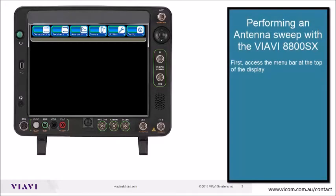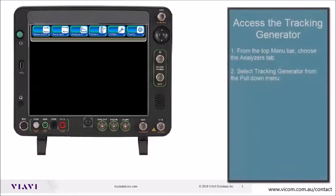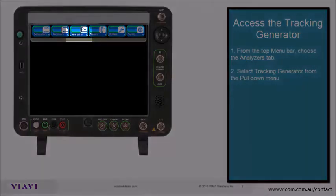First, access the menu bar at the top of the display. From the top menu bar choose the analyzers tab and select tracking generator from the pull-down menu.